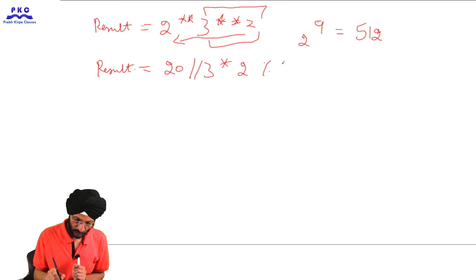Now suppose there is another variable with the same expression but parentheses have been used. The Python interpreter will first solve what is inside the parentheses. Inside the parentheses, 20 plus 4 becomes 24. Then it subtracts 3 from it and the output will be 21. So the Python interpreter will give the result of 21.